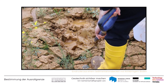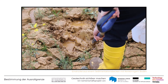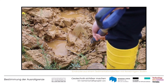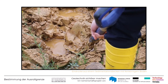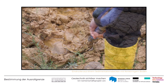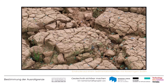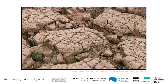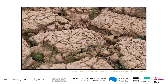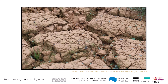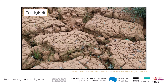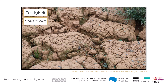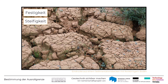Die Fähigkeit eines Bodens, sich plastisch zu verformen, hängt sehr stark vom Wassergehalt ab. Wenn zu viel Wasser im Boden ist, dann verhält er sich fast wie eine Flüssigkeit. Wenn es zu wenig ist, dann ist der Boden spröde und fest und lässt sich ebenfalls nicht mehr oder schlecht verformen. Für baupraktische Fragestellungen ist dies relevant, da zum Beispiel die Festigkeit oder die Steifigkeit des Bodens von den plastischen Eigenschaften und dem Wassergehalt abhängen.